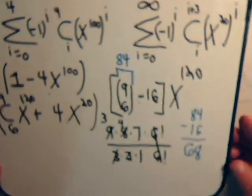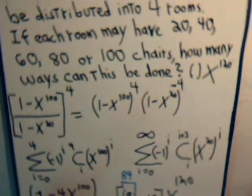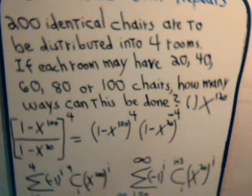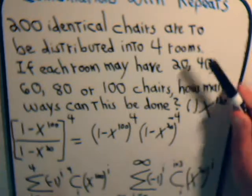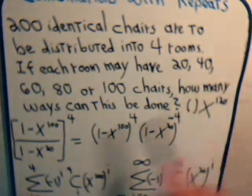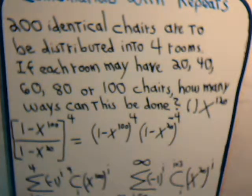So here then, going back up to the top part here. 200 identical chairs distributed into 4 rooms. Each room may have 20, 40, 60, 80, or 100. How many different ways can that be done? And the answer is 68.